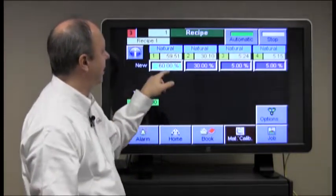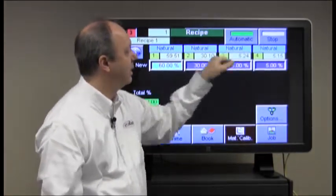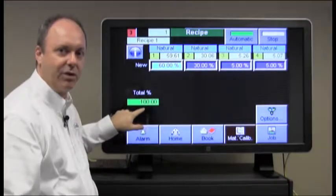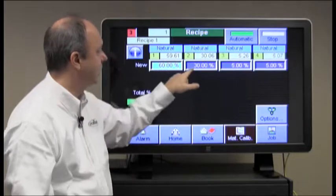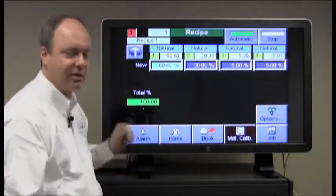At this point, we're running all naturals in our recipe, which requires they add to 100. In this example, we have 60, 30, 5, and 5. Of course, it adds to 100.